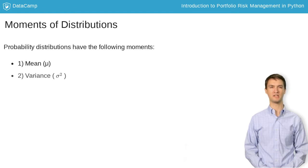The second moment is the variance, which is simply the standard deviation, or sigma squared. This is a measure of the variability in outcomes.